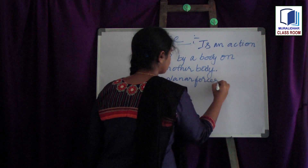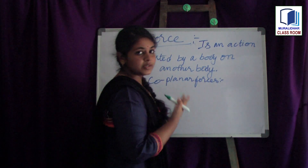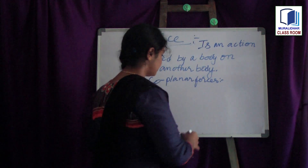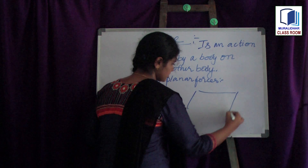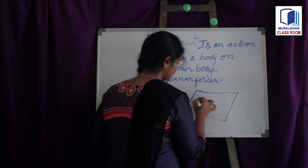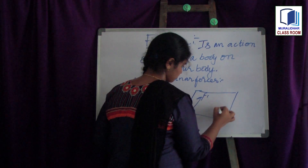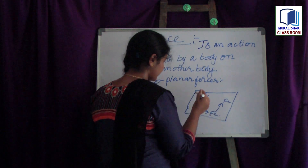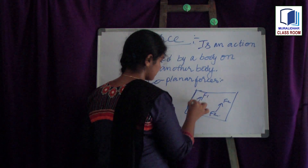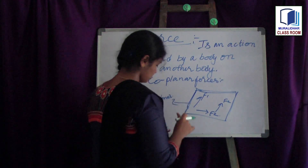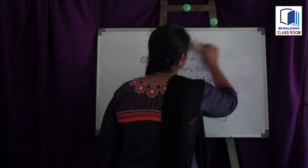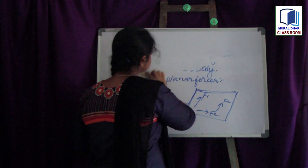These forces are classified into types based on their location. First one: coplanar forces. Coplanar forces means the forces which will be acting in the same plane. For example, consider a plane with forces F1, F2, in whatever direction — these are lying in the same plane. These are known as coplanar forces.